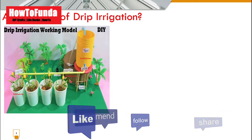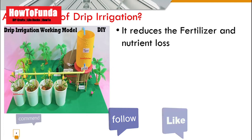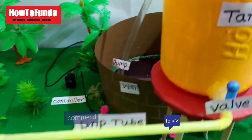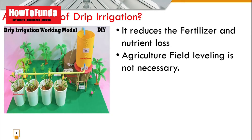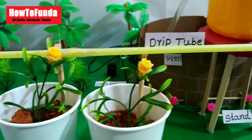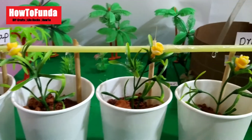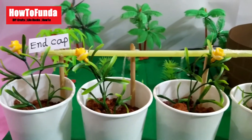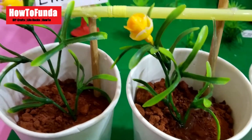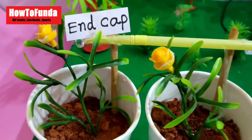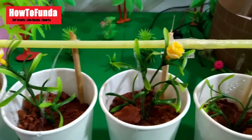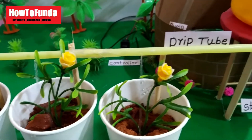Now let's understand the advantages of drip irrigation. The first advantage is that it reduces the utilization of fertilizer and nutrient loss. The second advantage is that in a normal situation, agricultural land needs to be leveled, but with drip irrigation, even if your land is not completely leveled or is an irregular shape, it still works perfectly.